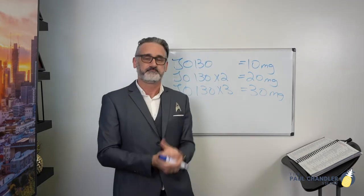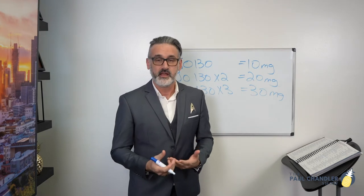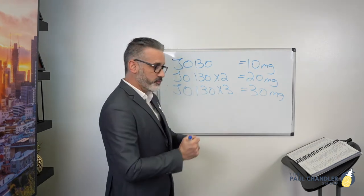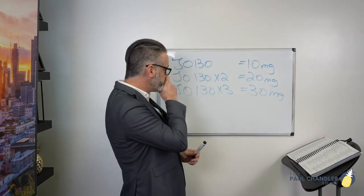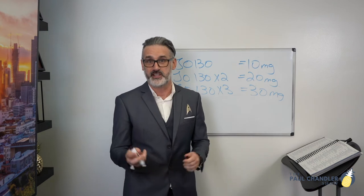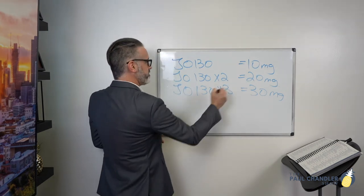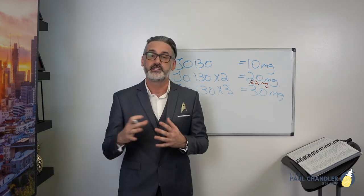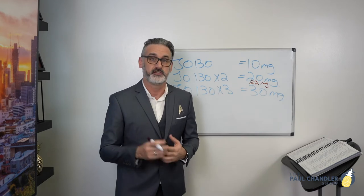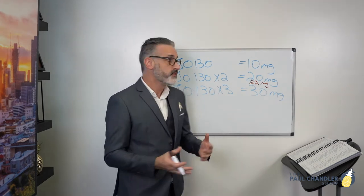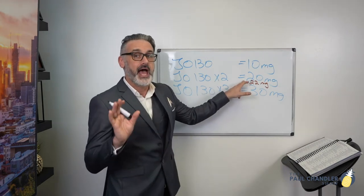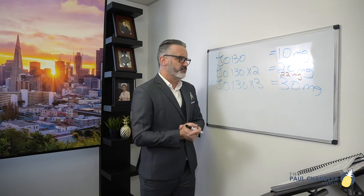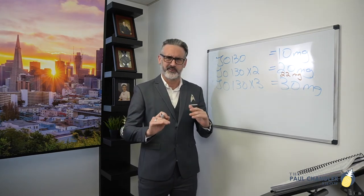Going back to Abciximab, J0130 — one unit is 10 milligrams. Now, different insurance carriers have different rules around coding for waste. Let's say, for example, that the patient is going to need 22 milligrams of Abciximab. Looking at 22 milligrams, that falls between 20 and 30. As far as coding it, look at your individual insurance carriers to see what their policy is for coding for waste. And disclaimer — I have absolutely no idea if 22 milligrams is an overdose; let's just say it's not, because I'm not a doctor.